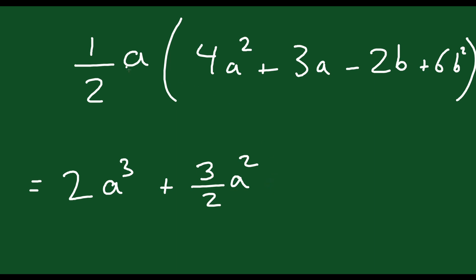Now (1/2)a times minus 2b. Well, (1/2) times 2, and that's negative, is just negative 1. And a times b is just ab.